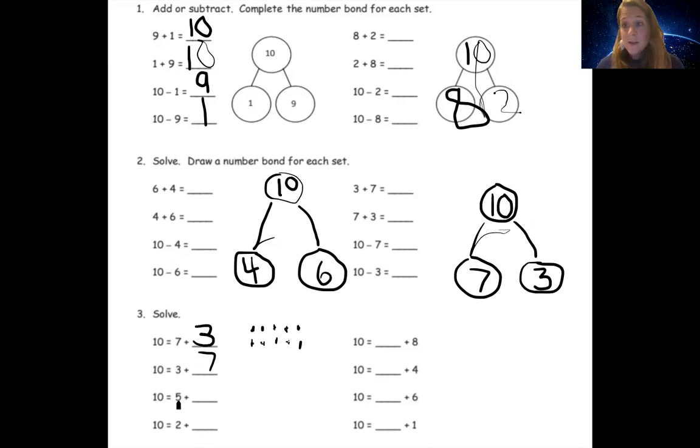Now for this one, I'm going to show you a different strategy for this one to solve. So we know 10 equals five plus a number. So we can go ahead and draw out our five or whatever number we already know. So we can do one, two, three, four, five. And then we need to know how do we get to 10? Well, we already have five. So let's go ahead and count on to 10. So we have five, ready? Six, seven, eight, nine, 10.